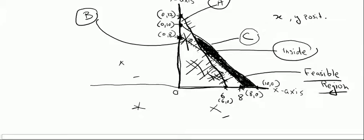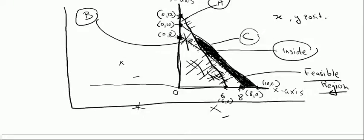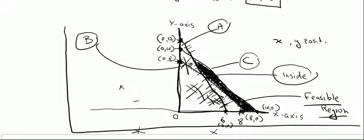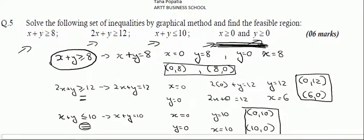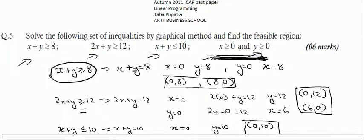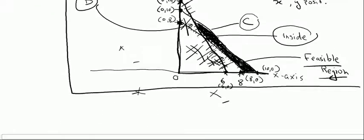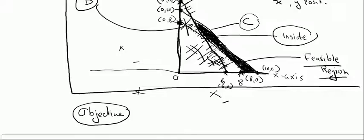I will end this video here. I have already uploaded many videos on linear programming including basic concepts and cost minimization, and will keep uploading more for AFC, MACA, and BFD examinations. A question may also ask you to calculate a cost minimization or profit maximization point for the feasible region using an objective function — my next video will cover that.